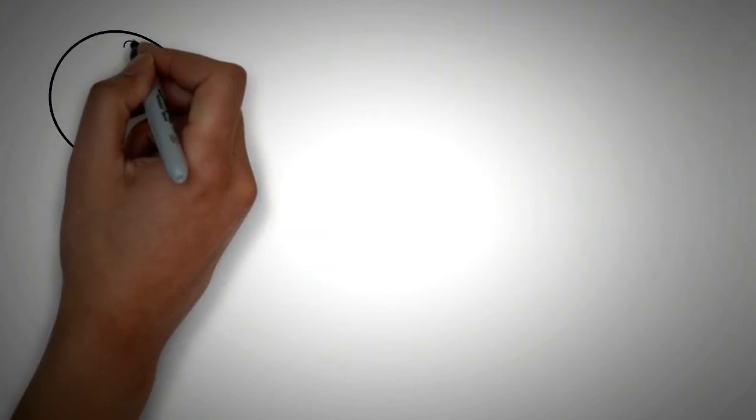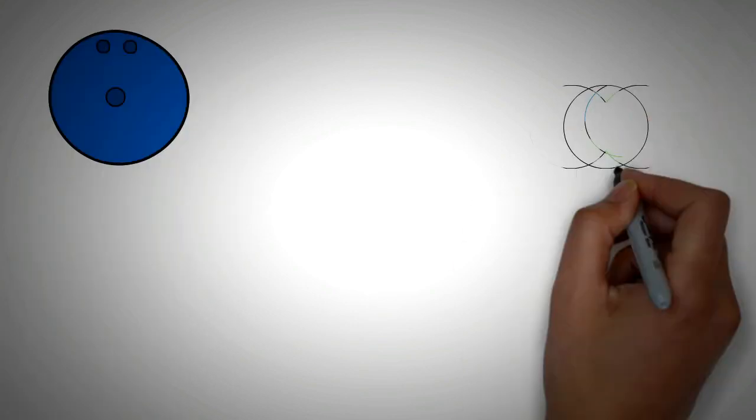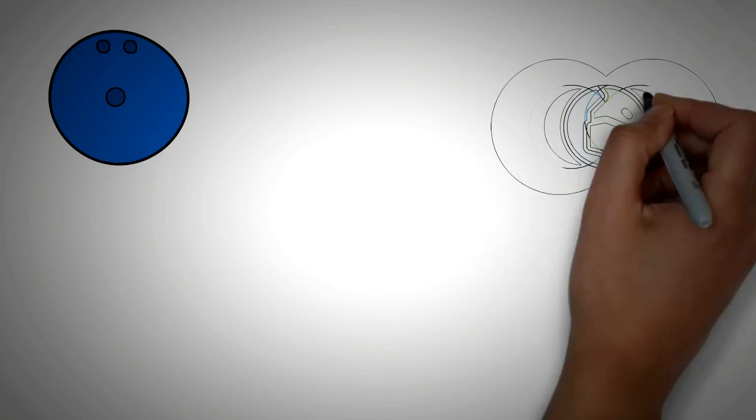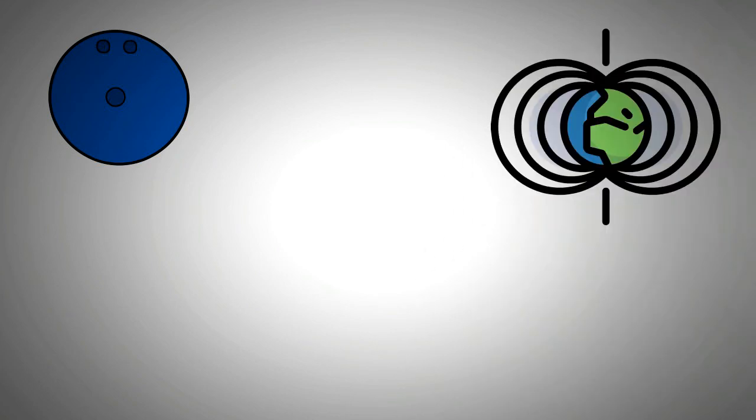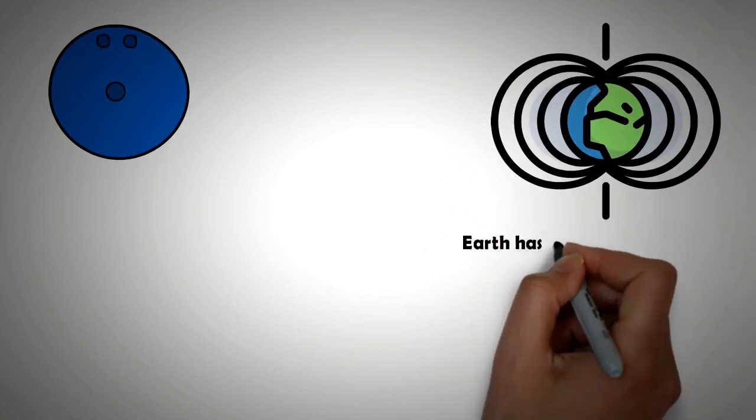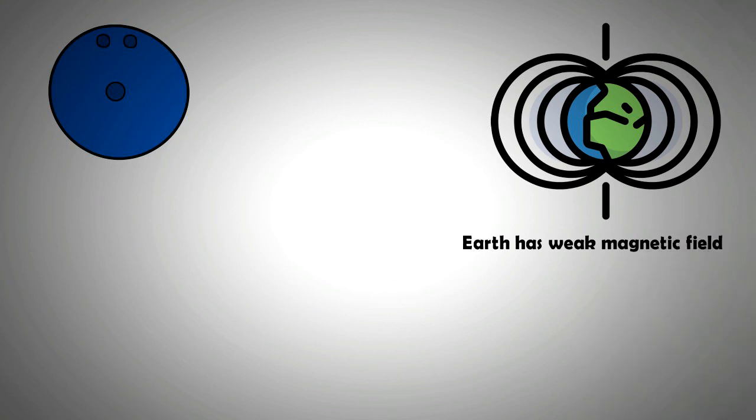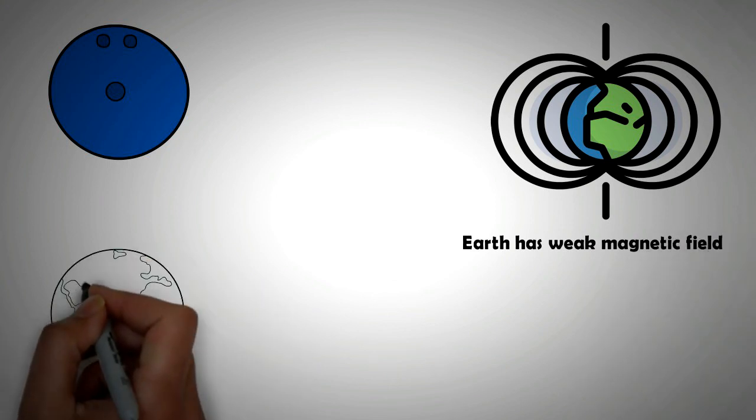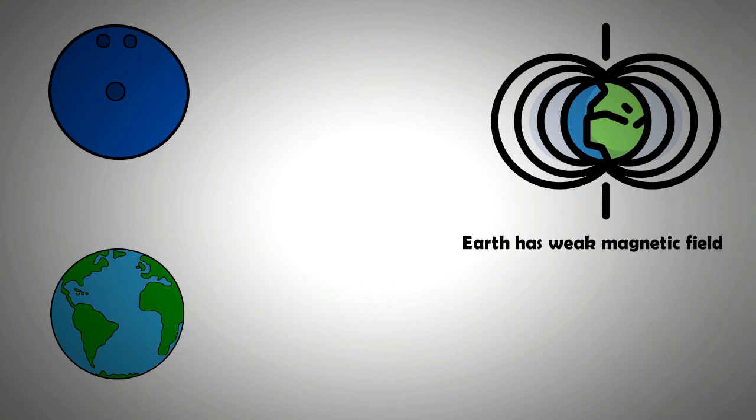For levitating heavier objects, stronger magnetic fields are required, which are not possible through Earth's own weak magnetic field or through permanent magnets. But a magnetic field that is extremely strong, created through a superconductor, can use Earth as a diamagnetic to create levitation.